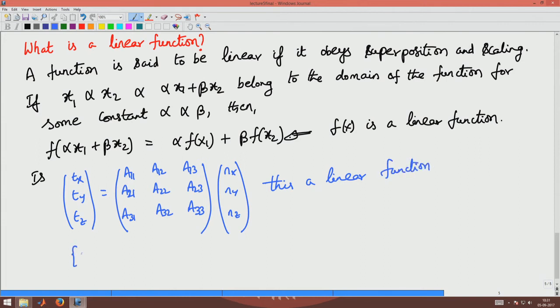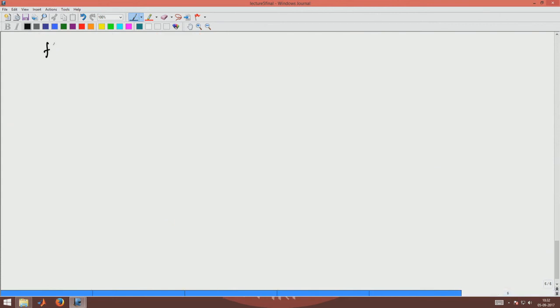Is this a linear function? In other words, is T = A times n a linear function for given matrix A? So what should I do? I have to check whether f(αn₁ + βn₂) is equal to α·f(n₁) + β·f(n₂). So let us go ahead and check.